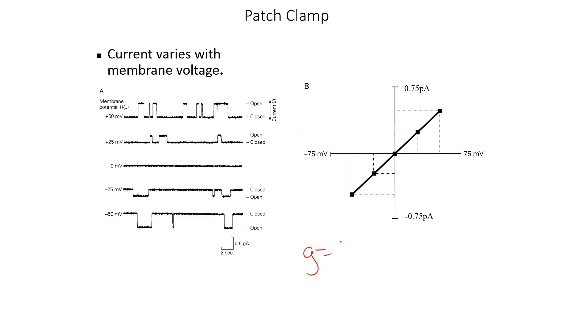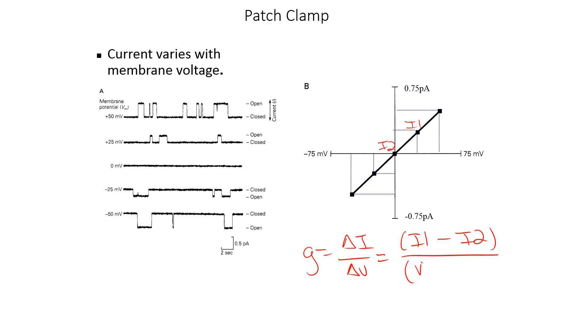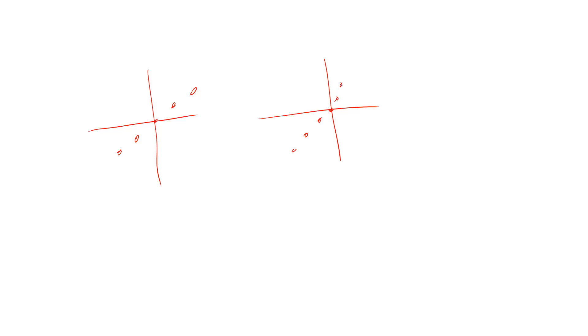Now if our origin had not been 0, 0, we would have had to take the current at one point minus the current at another point, divided by the voltage at the first point minus the voltage at the second point. And if our channel was not ohmic as in the previous example, but rather was rectifying so that it had two regions of slope, we would actually need to calculate the slope for each of those regions.